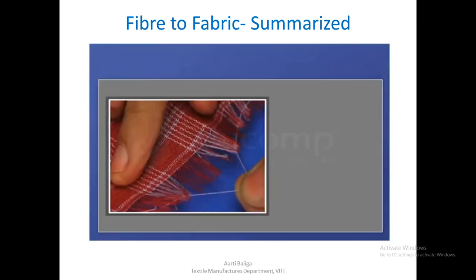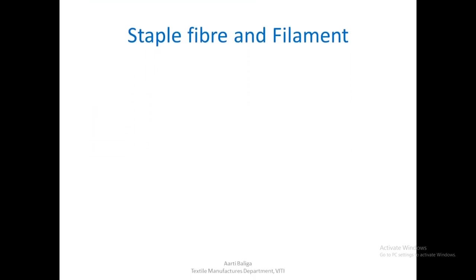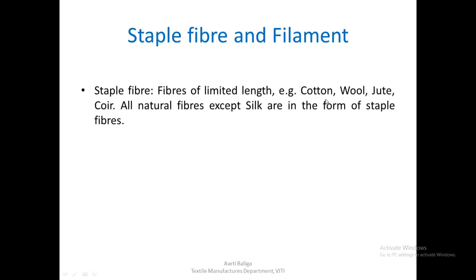Let us now see the difference between staple fibers and filaments. Staple fibers are fibers of limited length. Examples include cotton, wool, jute, and coir. All natural fibers except silk are in the form of staple fibers.